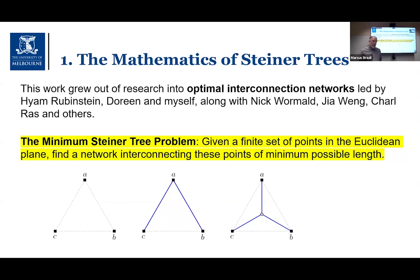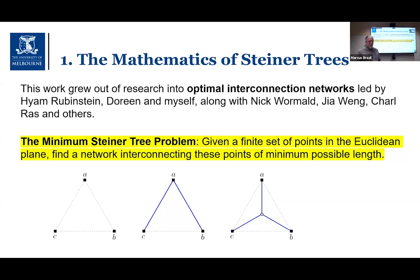For example, with three points at the vertices of an equilateral triangle with side length one, one way to interconnect them is to take two sides of the triangle, giving a network of length two — known as a minimum spanning tree. However, we can find a shorter network by adding an extra point in the center of the triangle. Joining each initial vertex to that extra point gives edges of length 1/√3, and the network has total length √3 — about 15% shorter than two.